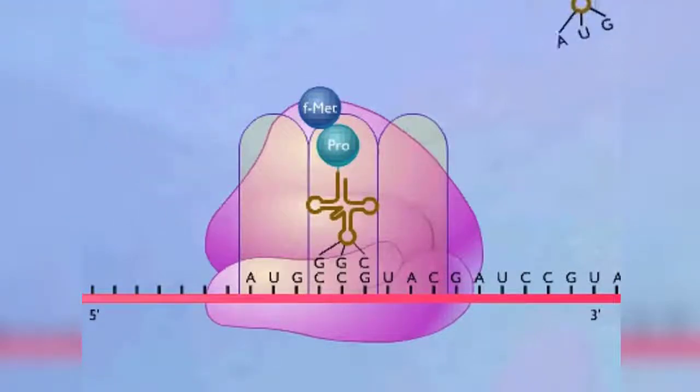A transfer RNA carrying the next amino acid now moves into the A-site where the anticodon on the transfer RNA matches the codon on the messenger RNA.